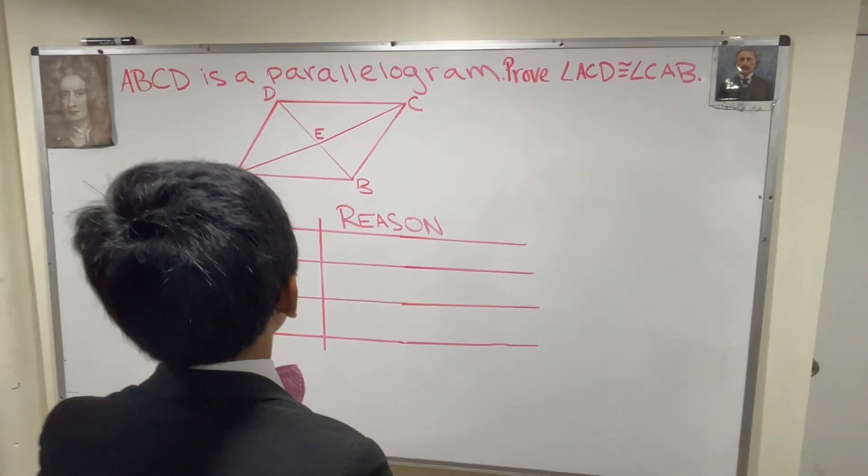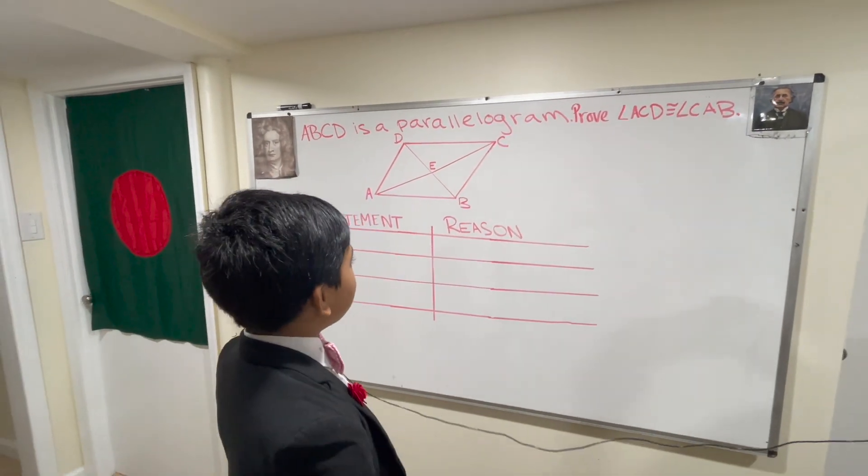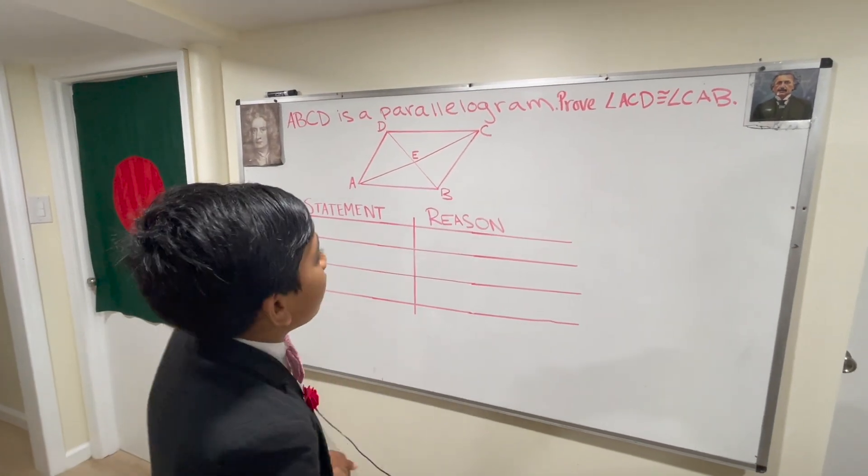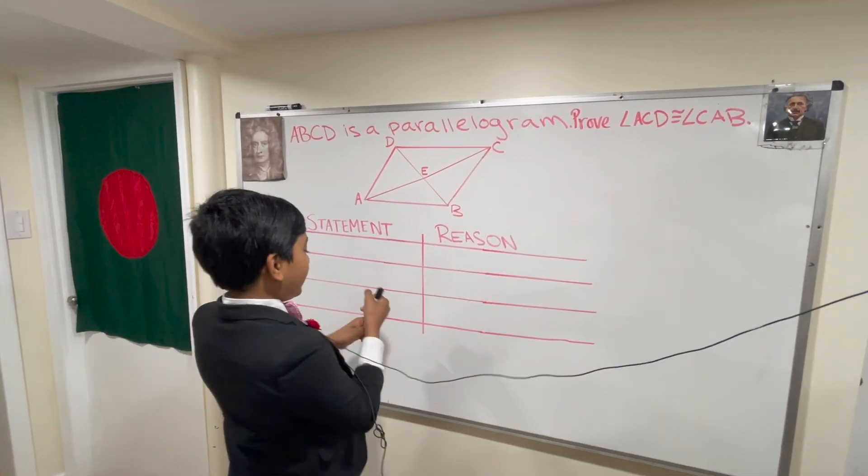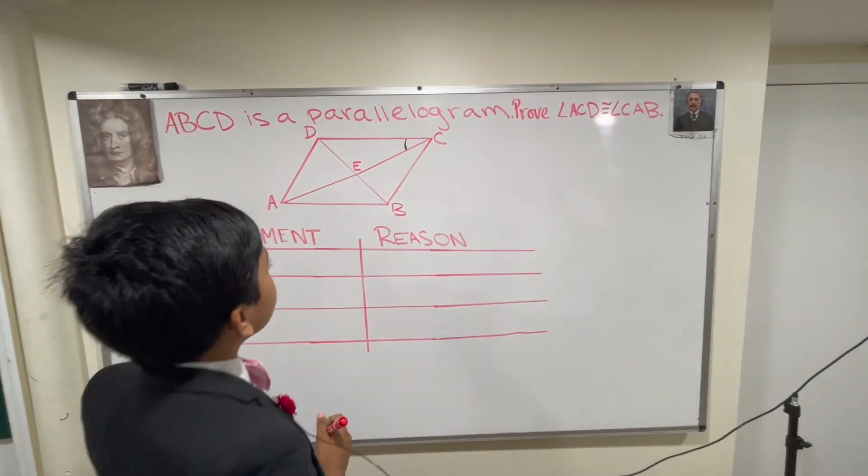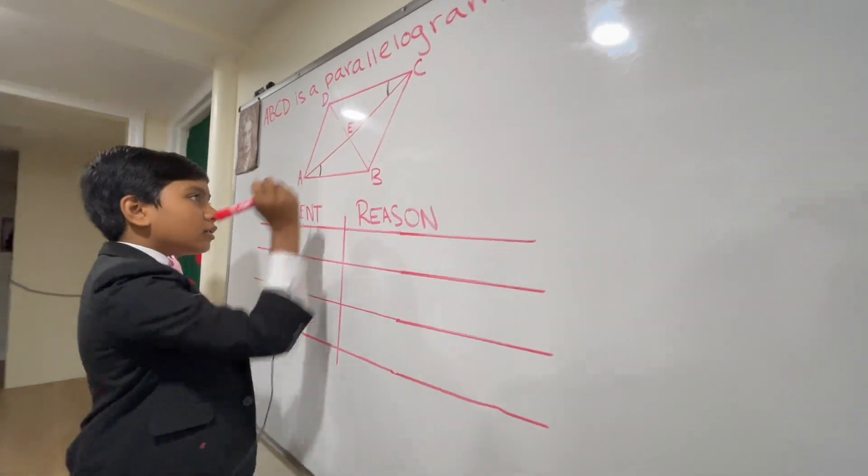So ABCD is a parallelogram. We've got angle ACD and angle CAB are equivalent. First, we've got angle ACD right over here, and we've got angle BAC right over here.